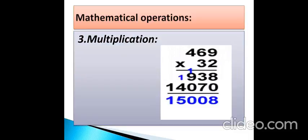The next mathematical operation is multiplication. The symbol we use is called multiply or into. The numbers are 469 multiplied by 32. First, taking the ones place of the second number — which is 2 — and multiplying by the top number gives 938. Next, moving to the tens place — which is 3 — gives 14,070. By adding the two results, the final answer is 15,008.